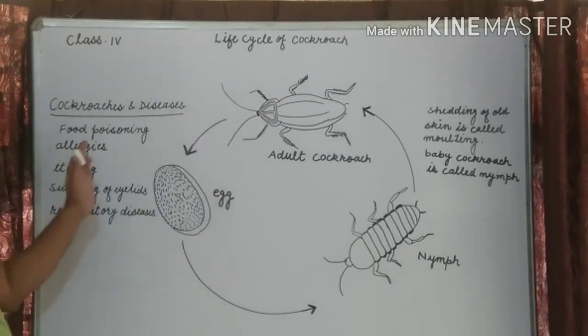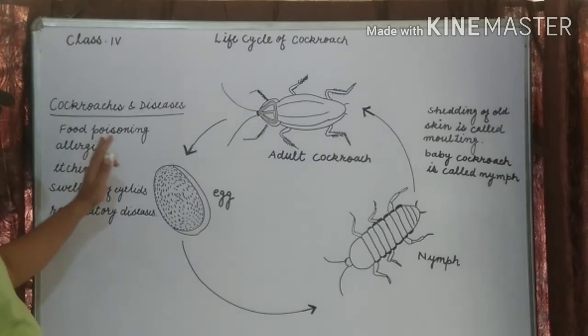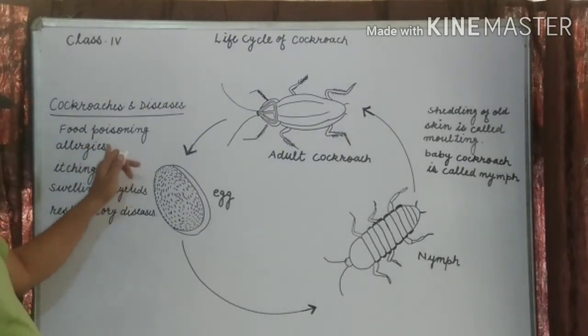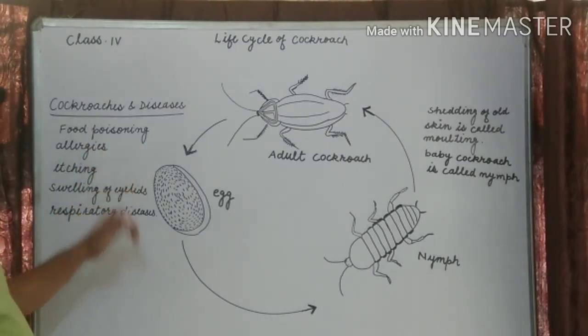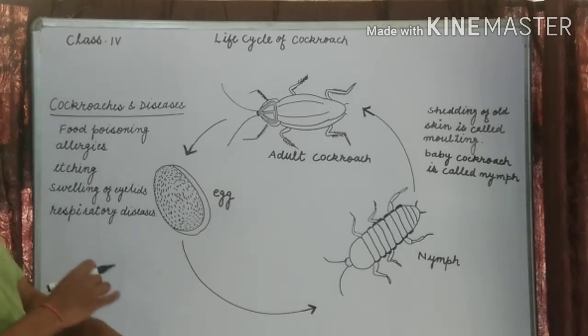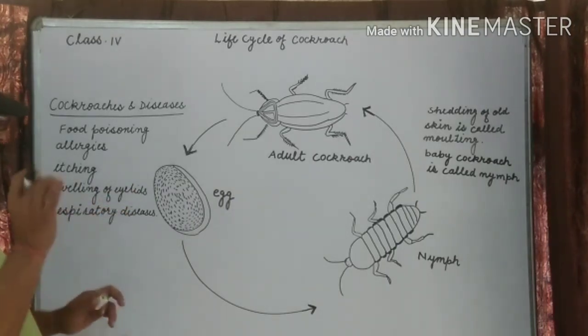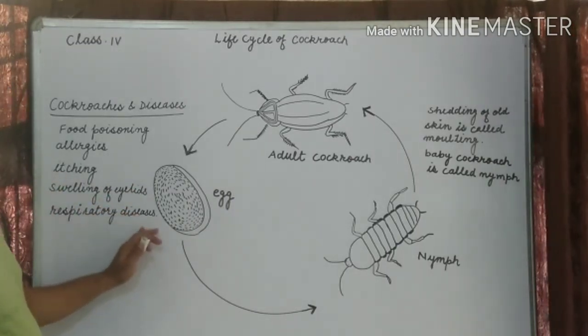Cockroaches spread diseases. Number one is food poisoning. Second is allergies — itching and swelling of eyelids. And third is respiratory diseases.